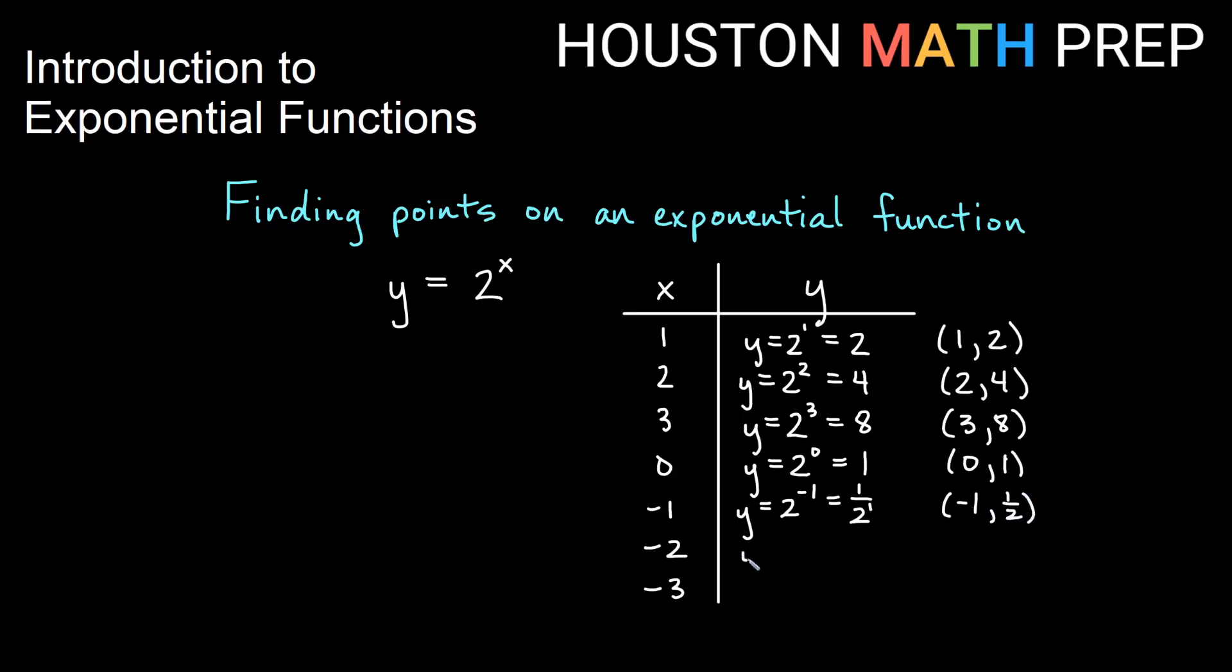And then if we plug in negative 2, 2 to the negative 2, that will be like reciprocal because we have a negative exponent of 2 squared. So that will give us 1 fourth. So we'll get a point of negative 2, 1 fourth. And then if we plug in negative 3, 2 to the negative 3, that will be like 1 over 2 cubed. And that will give us a value of 1 over 8. So when we plug in negative 3, we get 1 eighth.